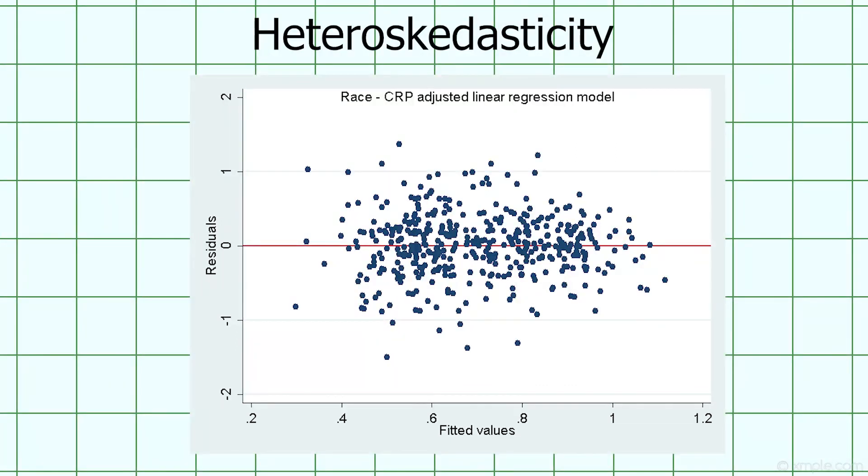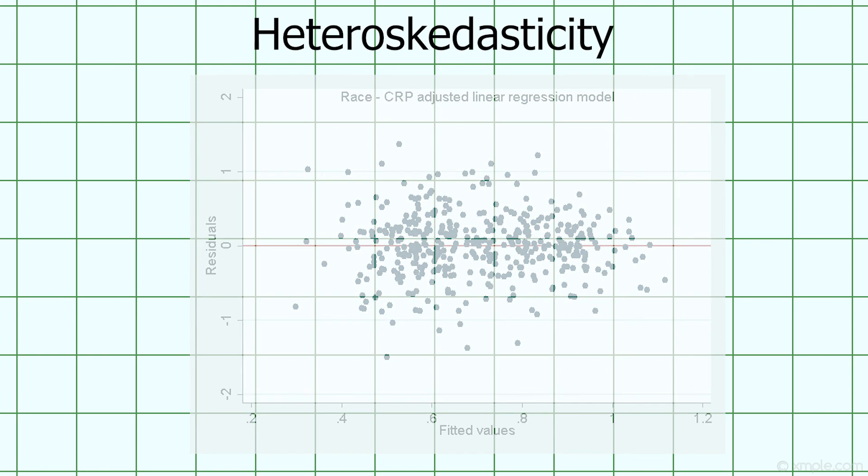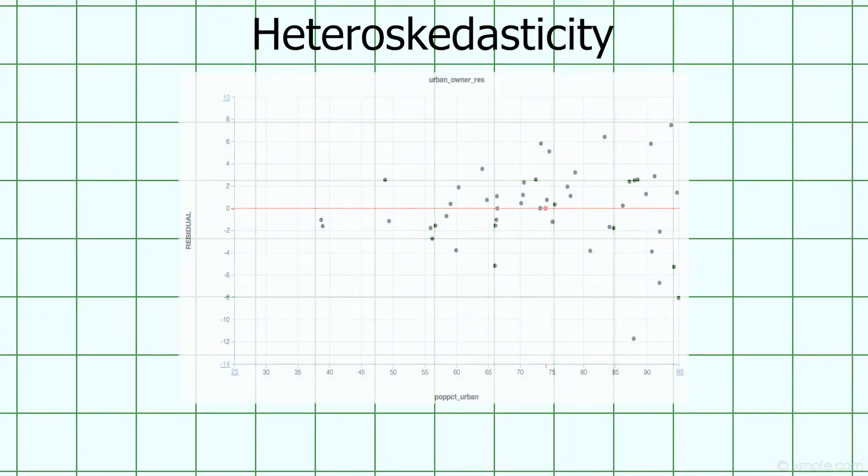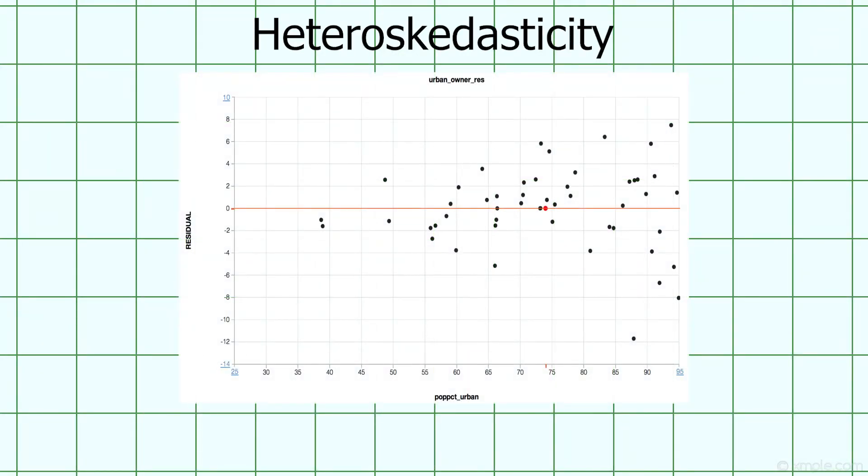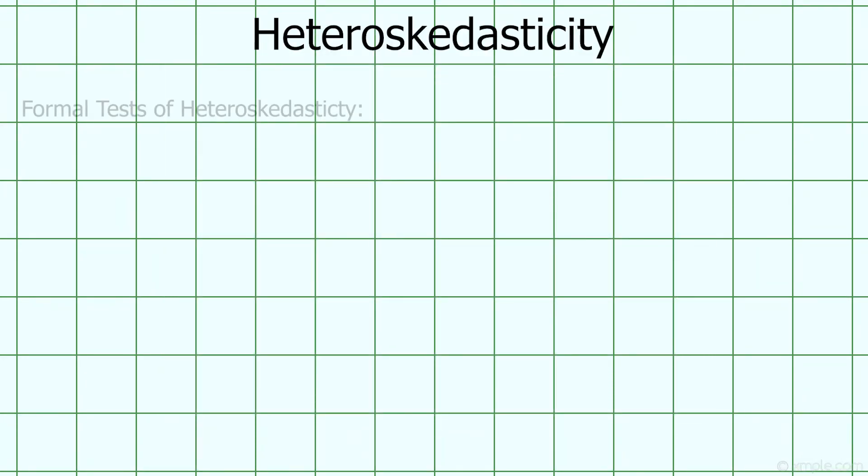One informal test is to just look at a scatter plot of the fitted values and residuals for each data point. For example, this residuals versus fitted plot displays homoscedasticity. The variance of the residuals is the same across the range of fitted values. Compare that with this scatter plot, which shows heteroscedasticity. At low fitted values, the variance of the residuals is small, and at large fitted values, the variance of the residuals is large, leading to this funnel shape. There are also more formal statistical tests that are used for detection of heteroscedasticity, like the Bruch-Pagan test, modified white tests, and Goldfeld-Quant tests, but most economists these days don't usually bother testing for heteroscedasticity.